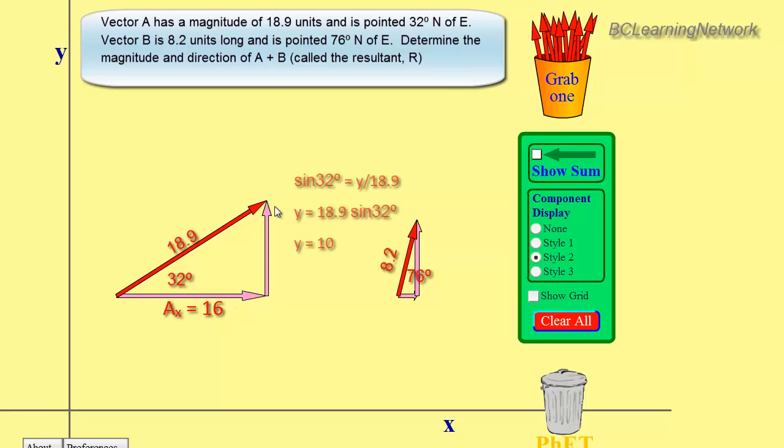Similarly, if we want to do the y, the y is opposite the angle, we're still using the hypotenuse, so we're going to use the sine function. Sine 32 is y over 18.9. So our y component will be 18.9 times sine 32, which is 10.02 units long, or roughly 10. So we've got an x component of 16 and a y component of 10.